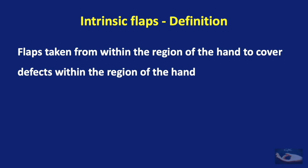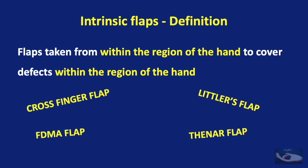Intrinsic flaps in the hand are basically flaps taken from within the region of the hand to cover defects within the region of the hand. Some examples of the intrinsic flaps are the cross finger flap, the Littler's flap, the FDMA flap, and the thenar flap.